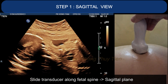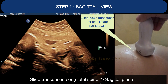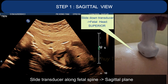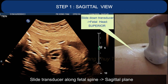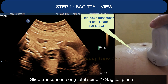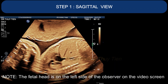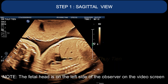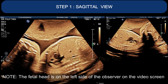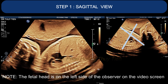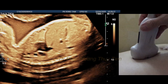Next, you will sweep the transducer downward from the fetal neck along its spine to obtain a clear central view of the fetus. Please be aware that the fetal neck is on the left side of the observer on the video screen.